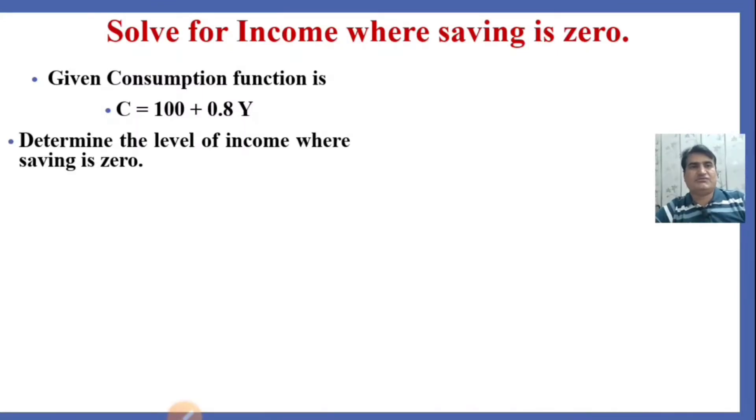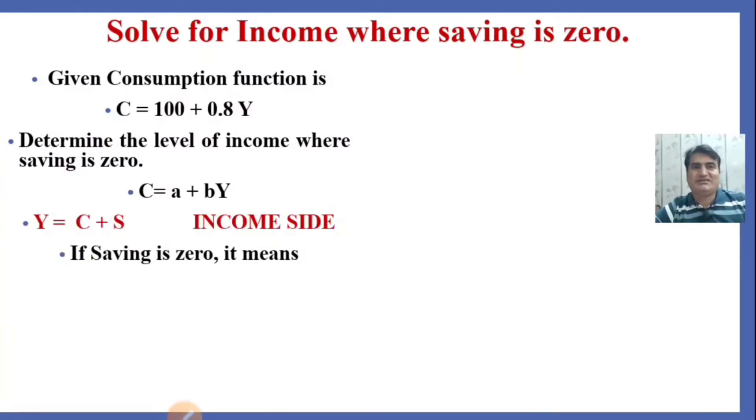By using this consumption function, we have to determine the level of income where saving is zero. Consumption function is equal to A plus BY. Y equals consumption plus saving. If we say saving is zero, it means the income is equals to consumption.